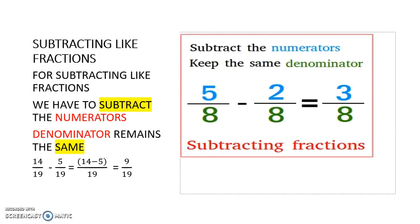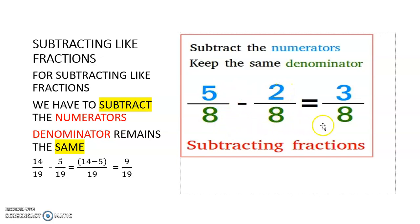The answer is 17 upon 20 metres of rope. Now let me move on to subtracting like fractions. It is simple, just like addition — only the operation changes; the method remains the same. We simply subtract the numerators and the denominator remains the same. For example, 5 minus 2 is 3, upon 8.